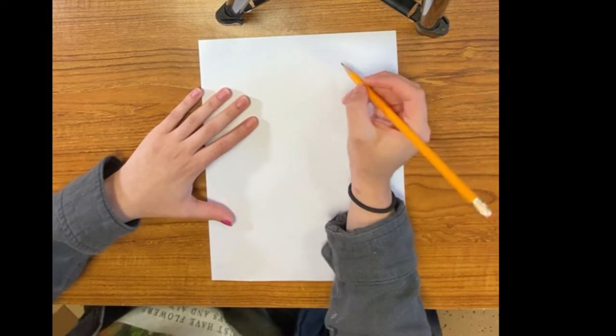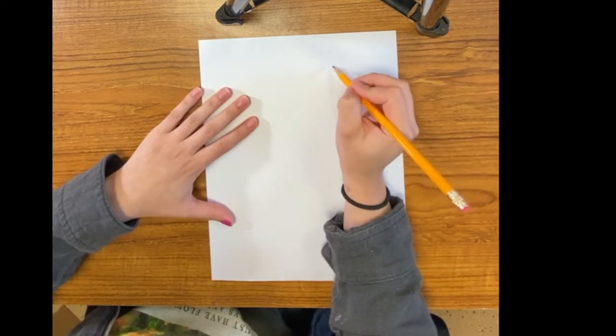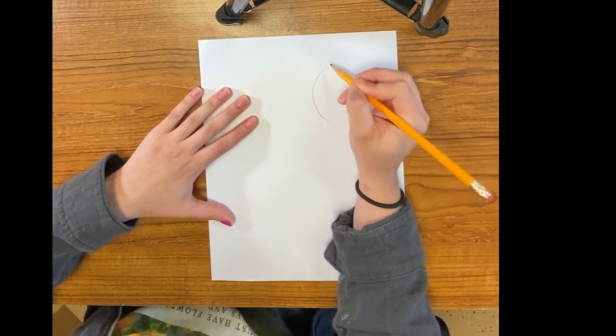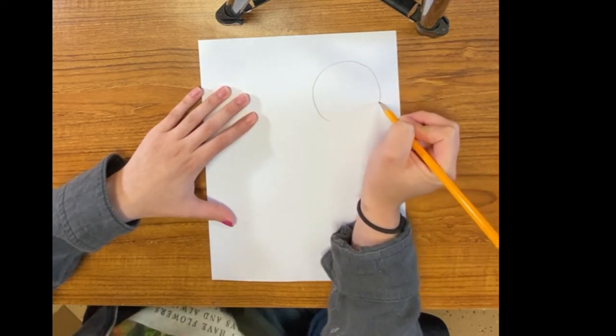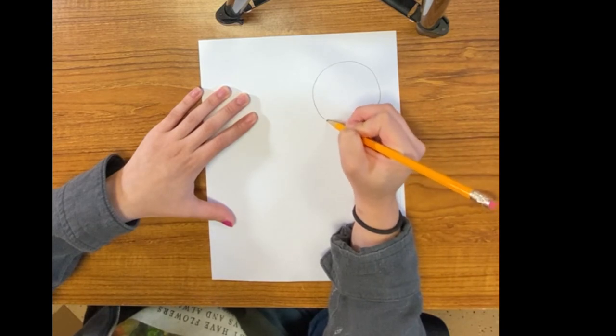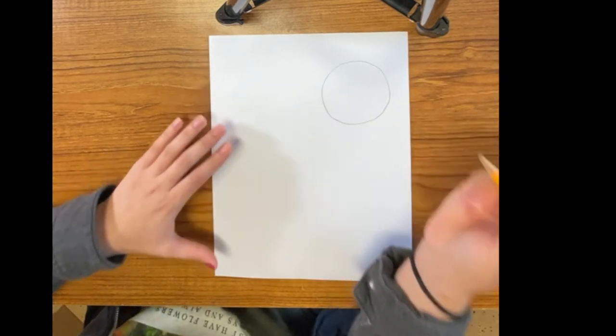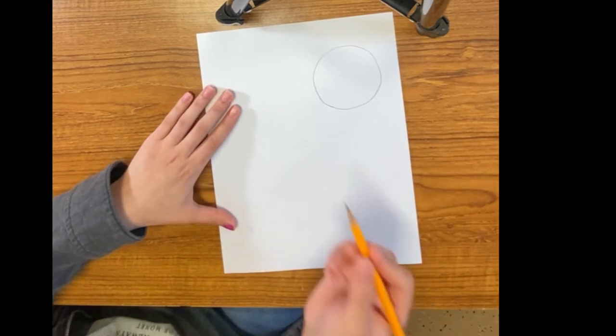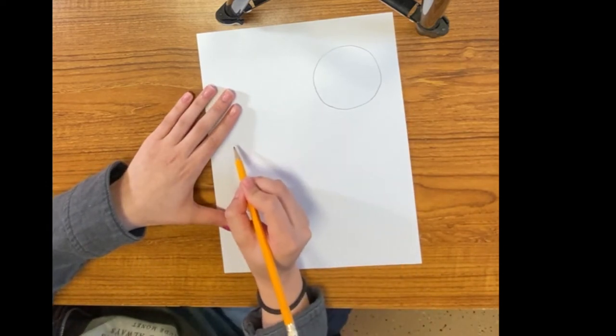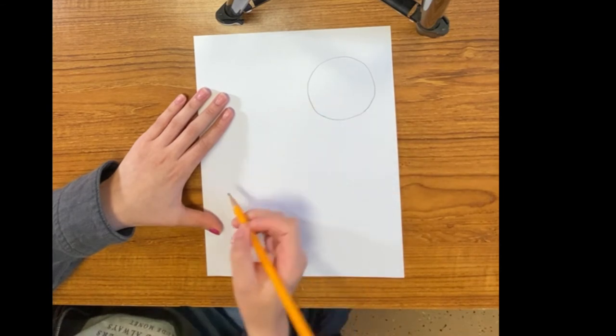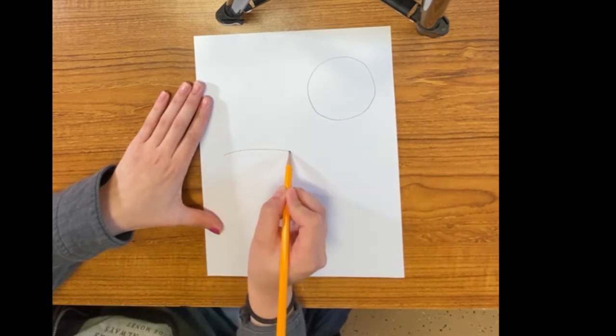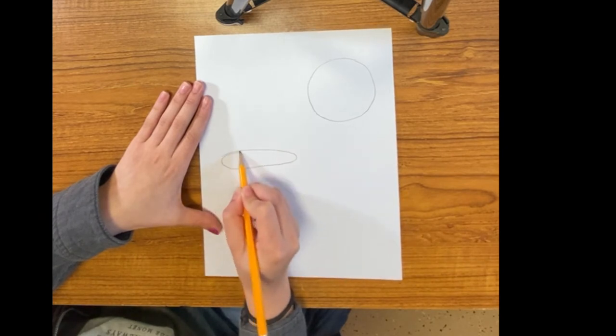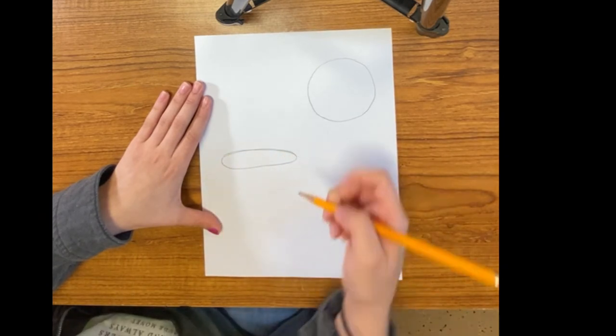We're going to begin here. We're going to start off by grabbing our pencil and make a nice circular shape, or just a circle. Next, we're going to draw an oval. This is going to be for our fishbowl. This is the cat's head.